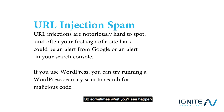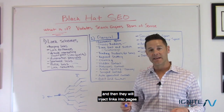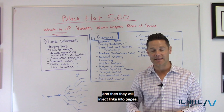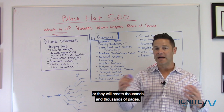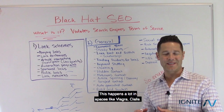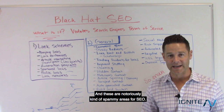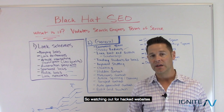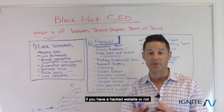URL injection spam: sometimes somebody will hack a site like WordPress and inject links into pages, or they'll hack pages and create thousands of pages through a script with links on them. This happens a lot in spaces like Viagra and Cialis — notoriously spammy areas for SEO. You can always check for a hacked website inside Google Search Console.